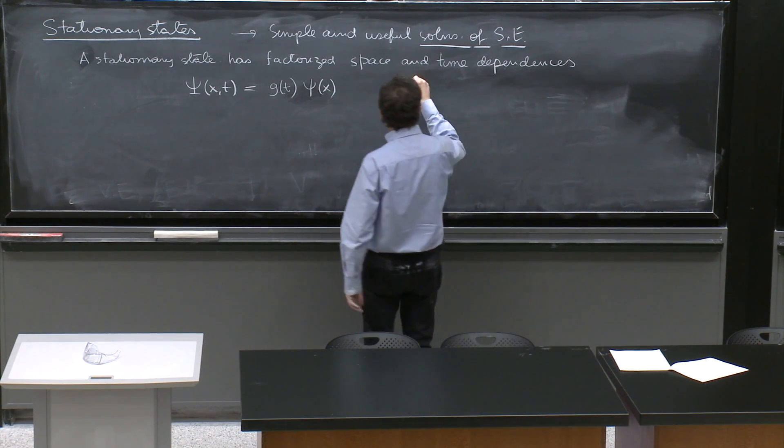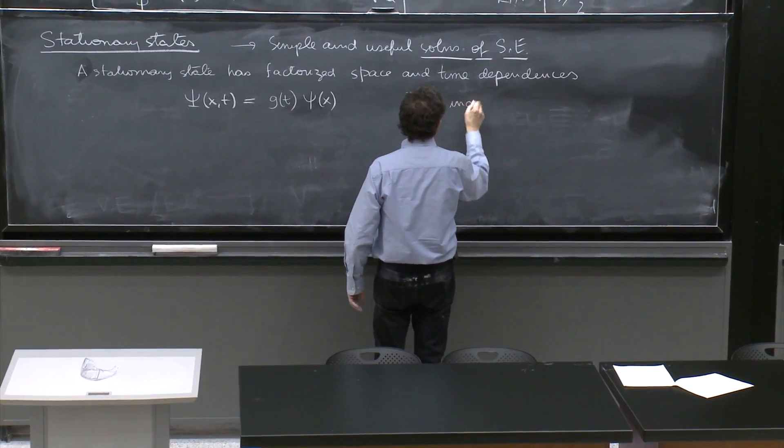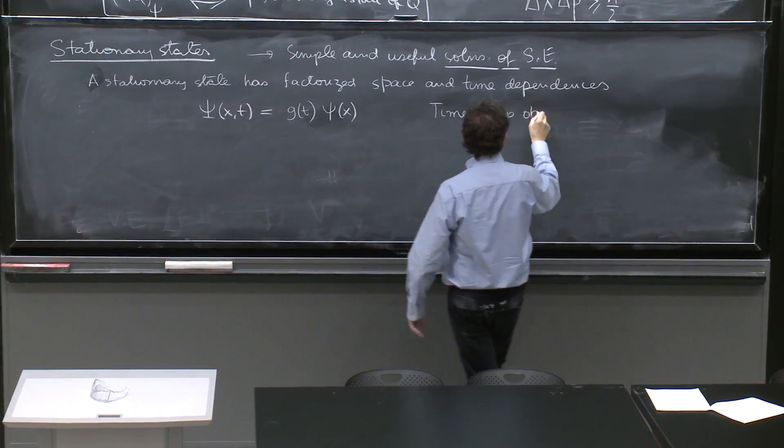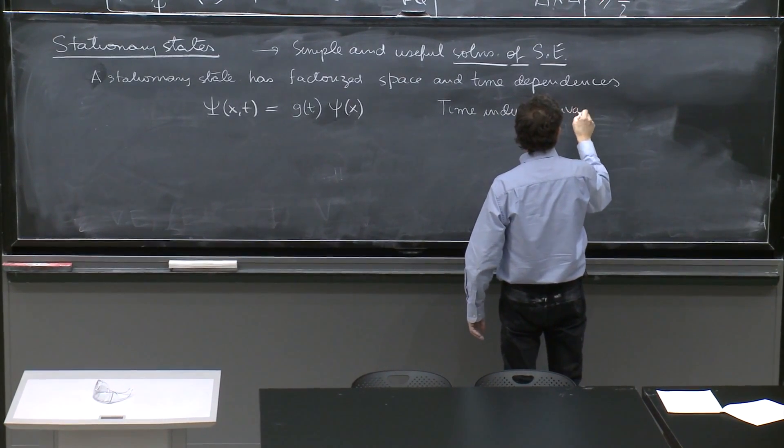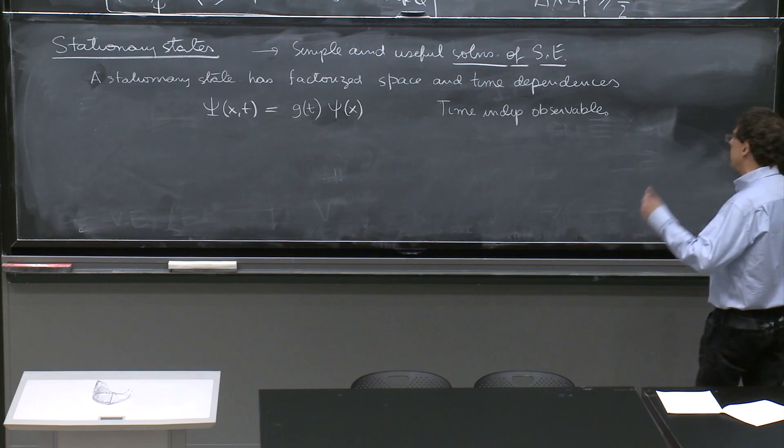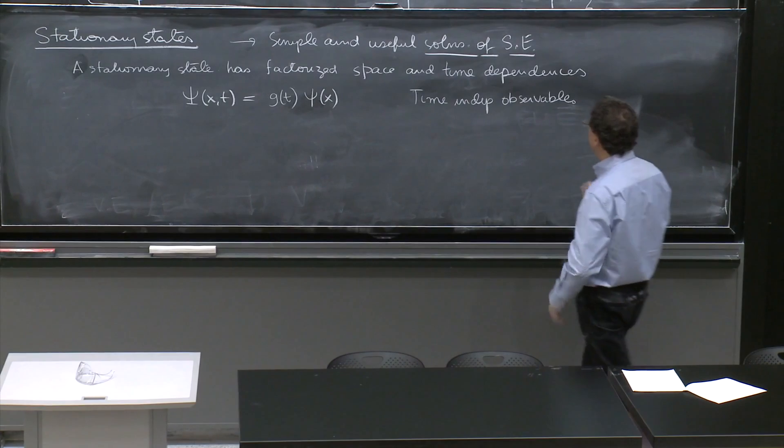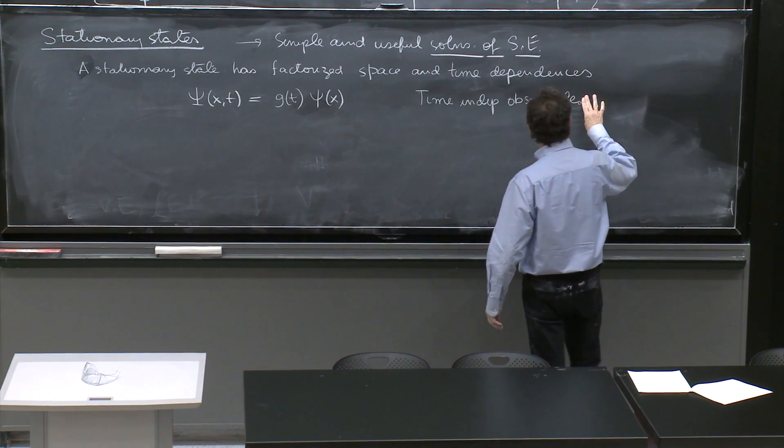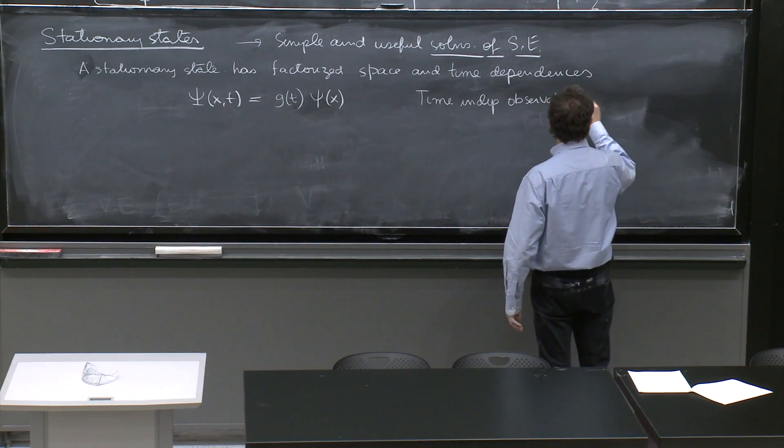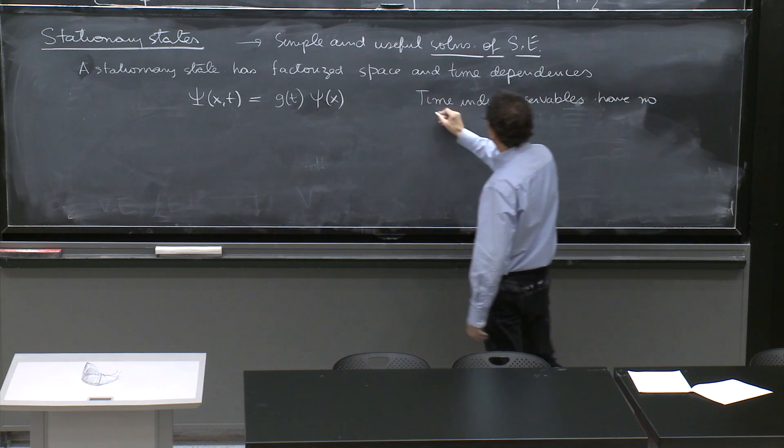So what we call time-independent observables, and the observables, which are all observables that are familiar at this moment, the Hamiltonian, the momentum, the position, the angular momentum. Time-independent observables have no time dependence.